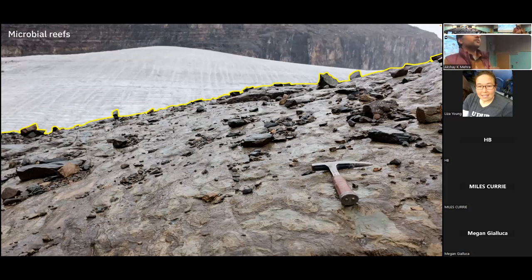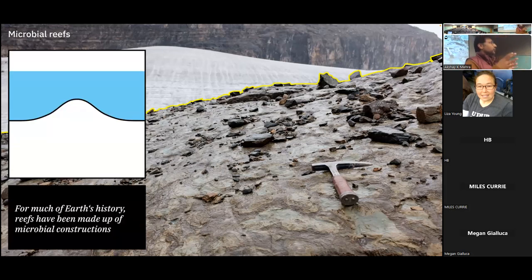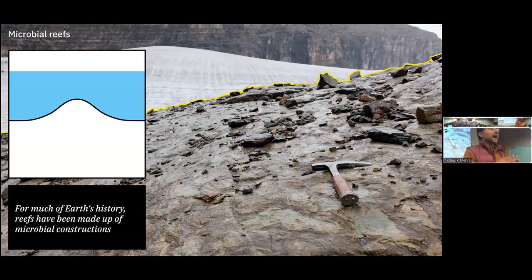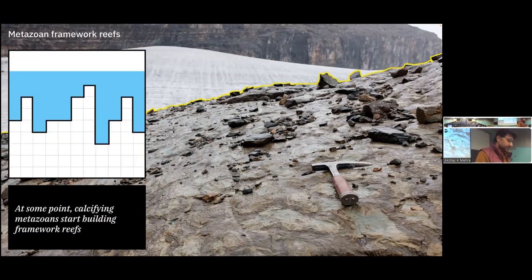I'm going to start with this photograph taken on Salient Mountain in the Canadian Rockies. In the foreground is a glacier, and as it has been retreating it's been exposing 540 million year old rocks — these microbial mounds. If you look carefully at those microbial mounds, you would find fossils that people think to be Earth's first biomineralizing organisms. Generally, when we think about reefs through time, these reefs have been built of microbial constructions for most of Earth's history — stromatolites and thrombolites have been the predominant reef builders.